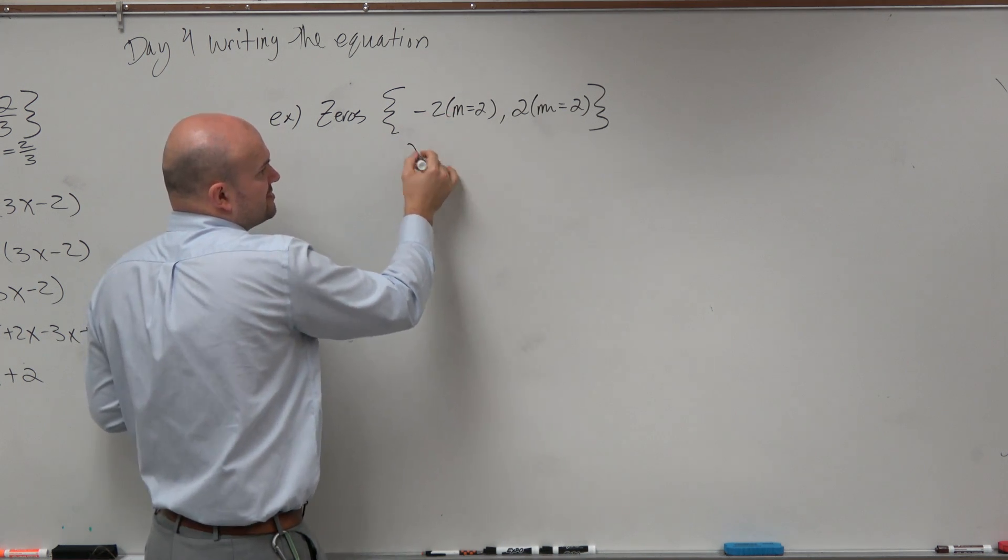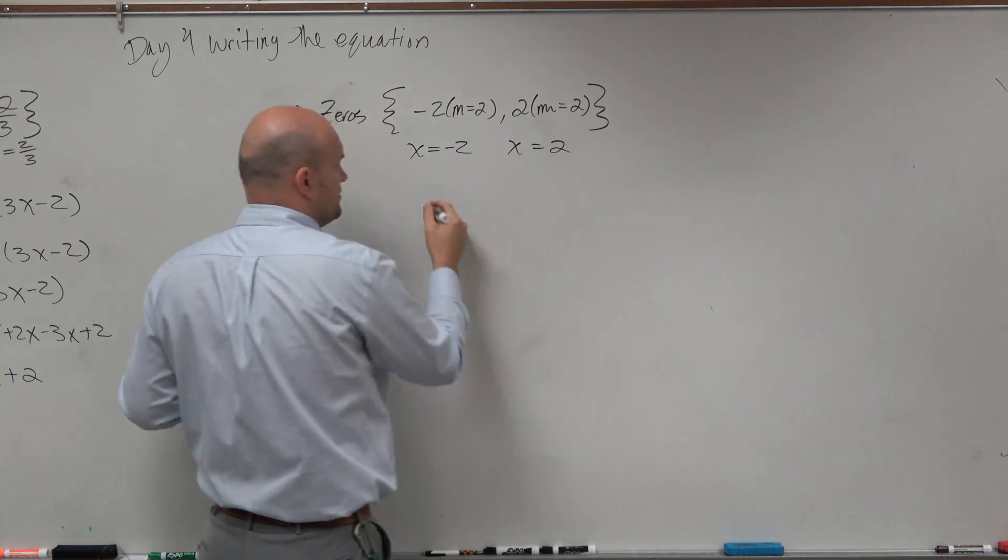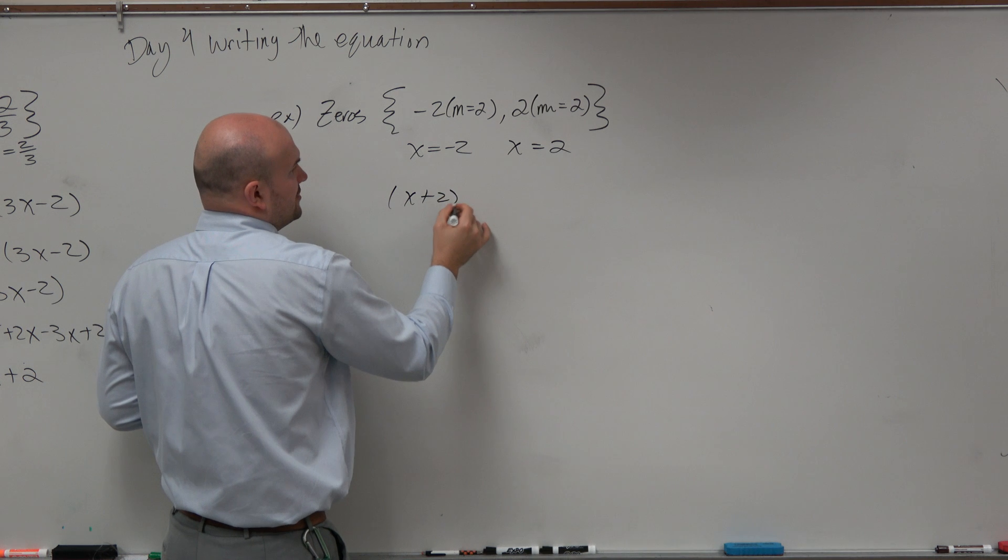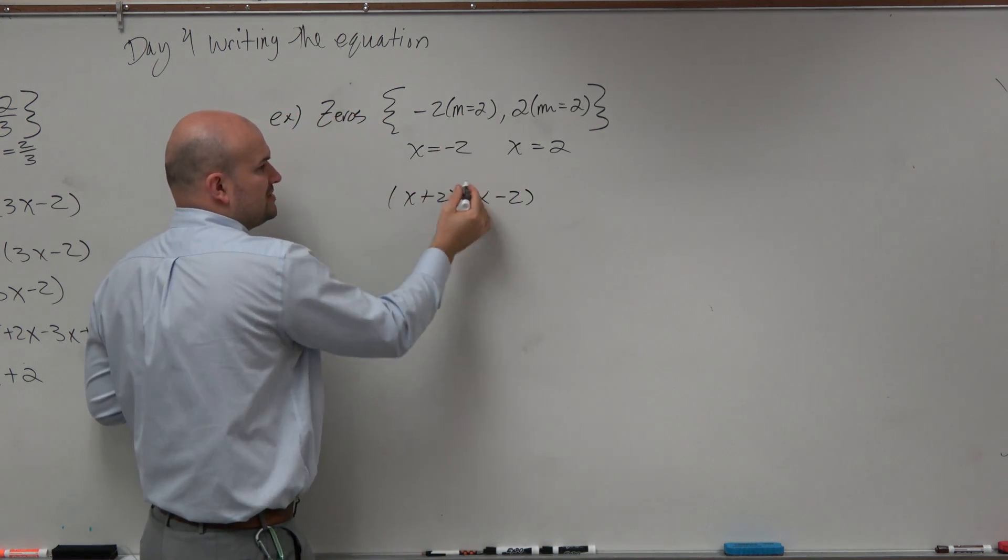So again, just looking at the zeros, we have x equals negative 2 and x equals 2. So the factored form is going to be (x + 2) and (x - 2). However, they're both raised to a multiplicity of 2.